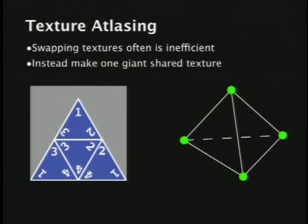You might think you can have one texture per object in your game, but swapping textures is really expensive. Almost always you'll make what's called a texture atlas — one big texture map with lots of little bits in it for different things. Your hockey puck might be in one part, the table in another. They all share the same texture file so you don't have to worry about swapping textures, with texture coordinates mapped to small regions inside.